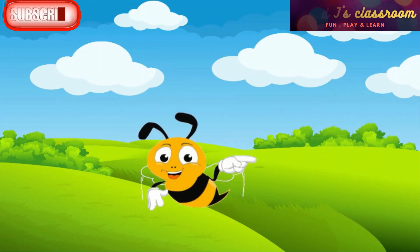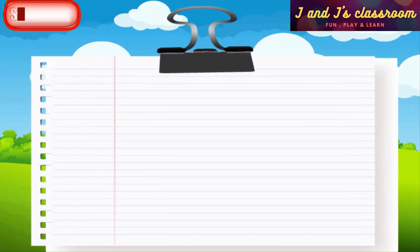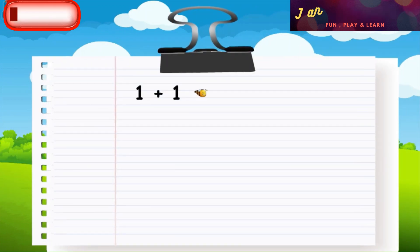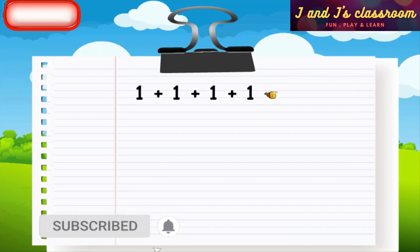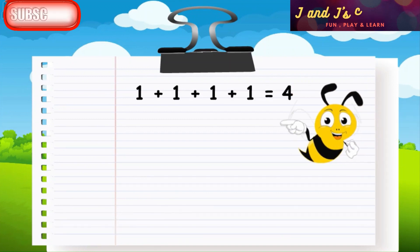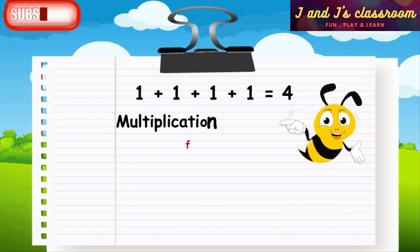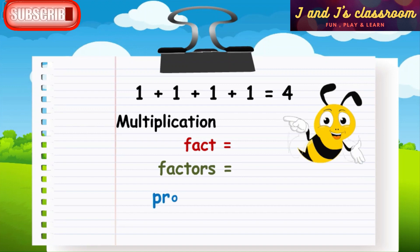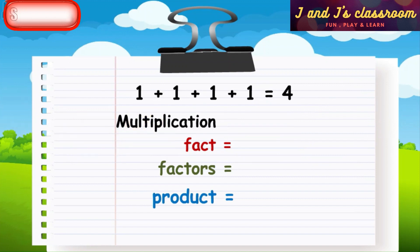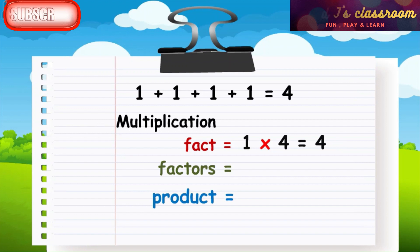Now listen to these examples. 1 plus 1 plus 1 plus 1 plus 1 is equal to 4. Let's find the multiplication fact, factors, and product. See the numbers — number 1 is repeatedly added 4 times. So the multiplication fact is 1 cross 4 is equal to 4. Here, factors are 1 and 4, and the product is 4.